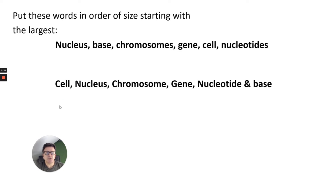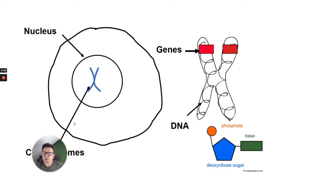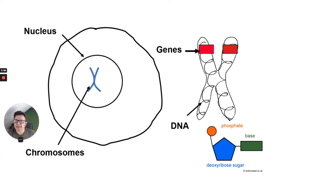So the order is: cell, nucleus, chromosome, gene, nucleotide and base. And hopefully you've learnt about the structure of DNA and RNA and about nucleotides in the biological molecules section. Here's a very quick, very basic diagram showing the relative nature of the nucleus, chromosome, genes, DNA, and then nucleotides and bases — A, T, C and G.